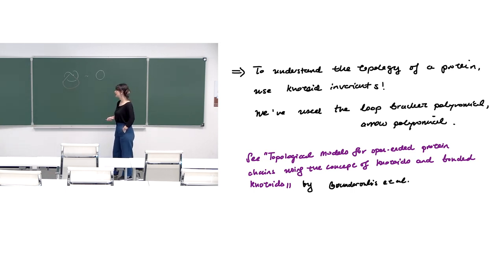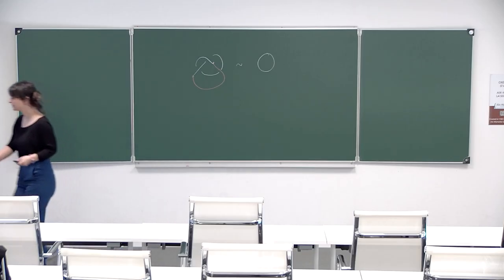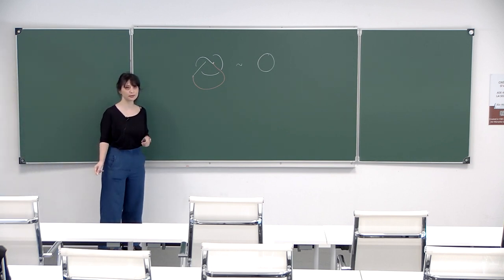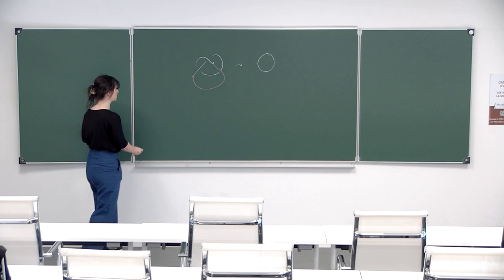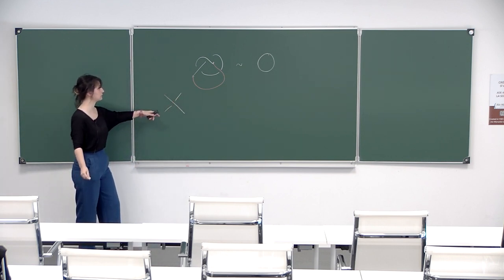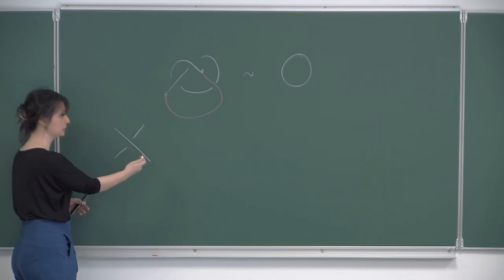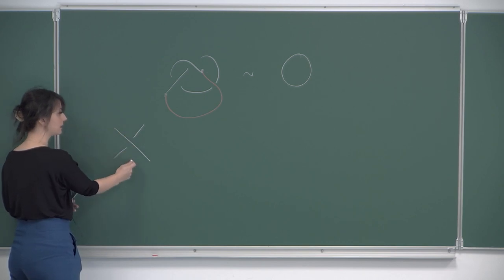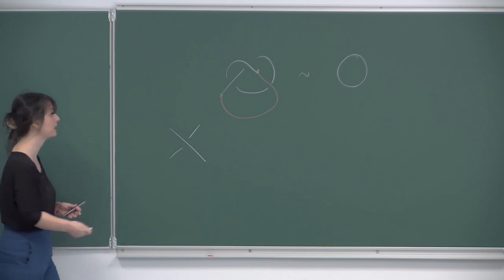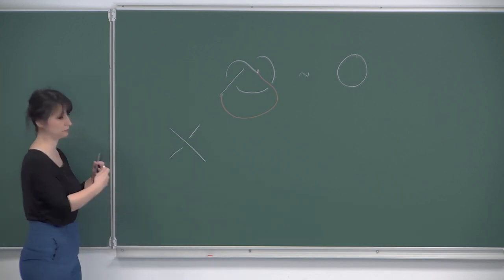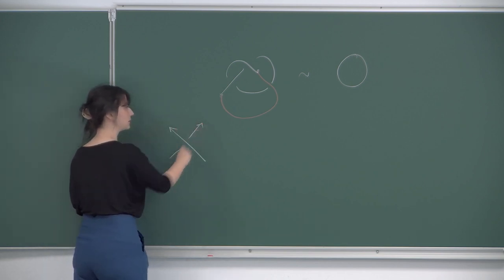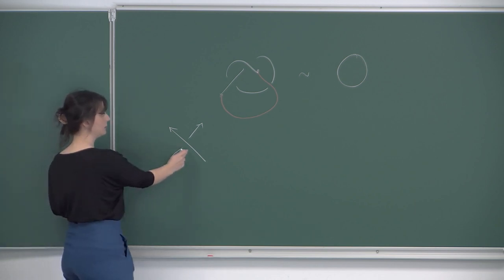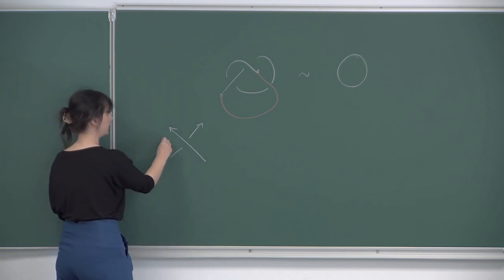Another invariant is the arrow polynomial, which I haven't shown you — it's a generalization of the Jones polynomial utilizing a very similar idea to the construction of the bracket polynomial. If we consider a crossing, what we did for the bracket polynomial was to smooth out the crossing in two possible ways: vertical or horizontal, A-type or B-type. In the arrow polynomial construction we consider oriented diagrams, unlike the bracket polynomial.